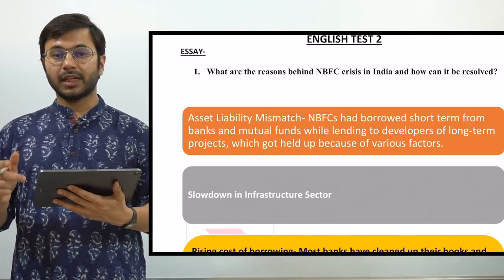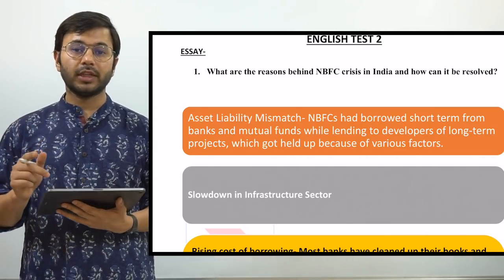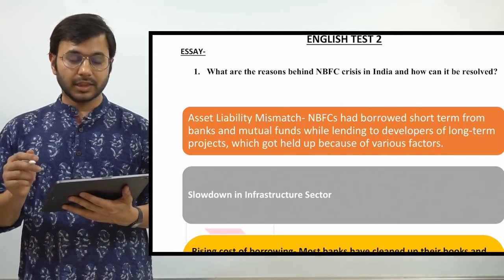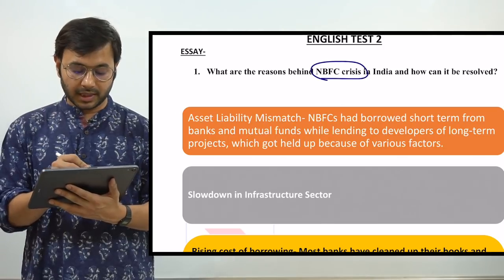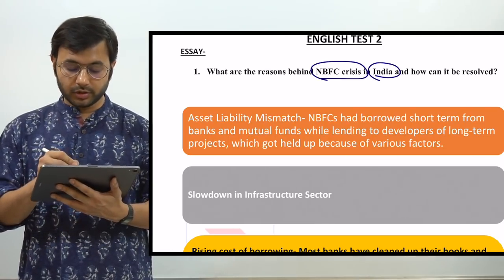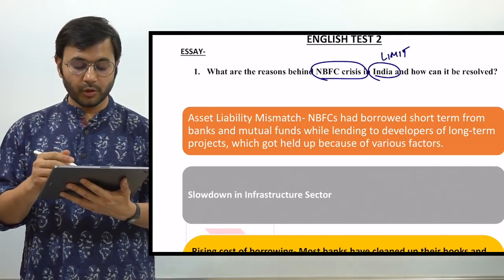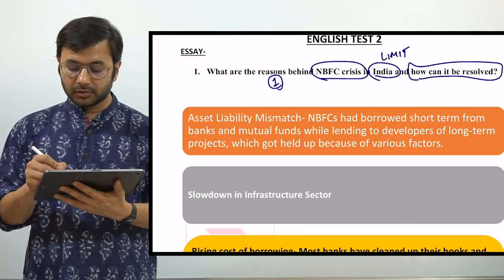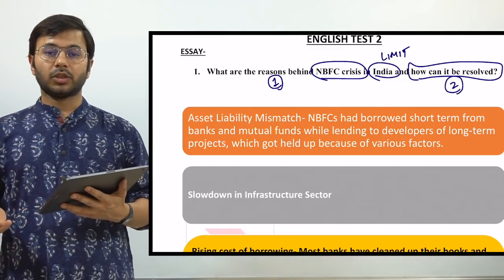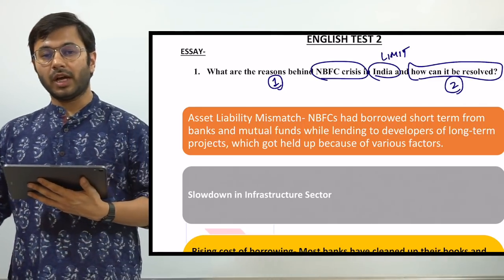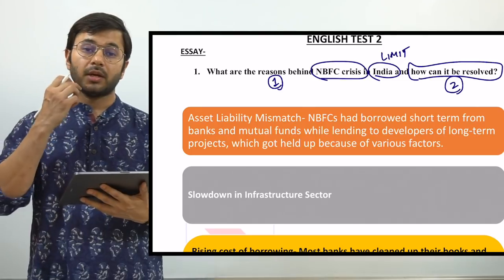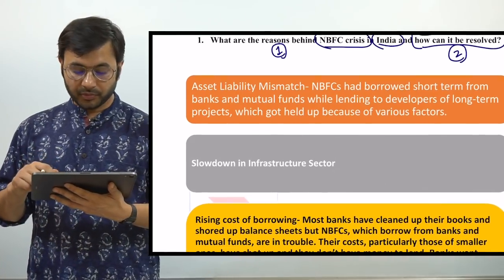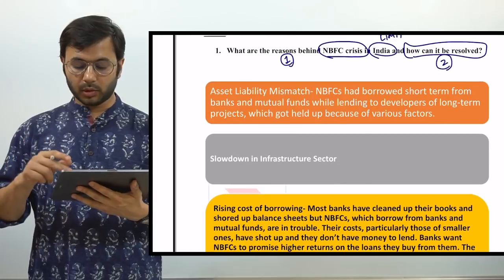The first topic that we are going to analyze today is: what are the reasons behind the NBFC crisis in India and how can it be resolved? As I told you in the first lesson, the first goal is to identify the important keywords before you start writing an essay. The keywords here are: NBFC crisis in India — so we limit ourselves to India, not the global scenario — and how can it be resolved. We have to answer two things: the reasons for this crisis and how it can be resolved. Let's start with the reasons first, then move to the solutions.